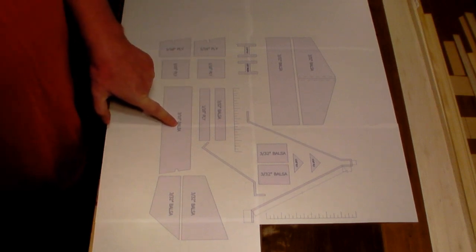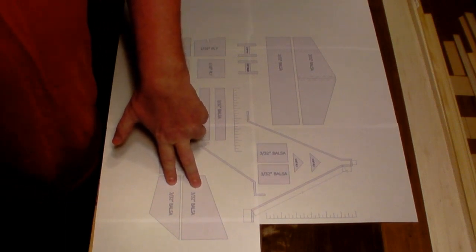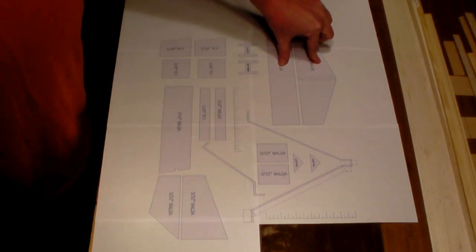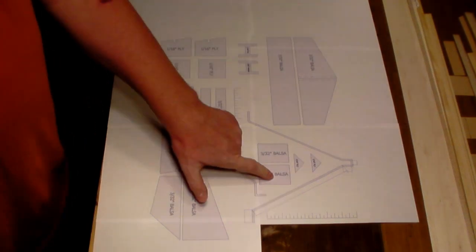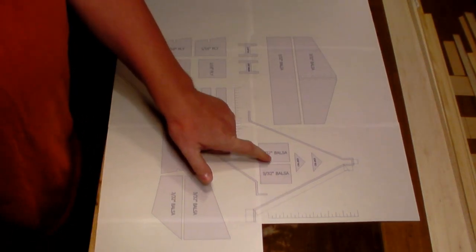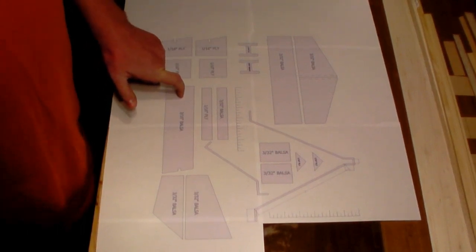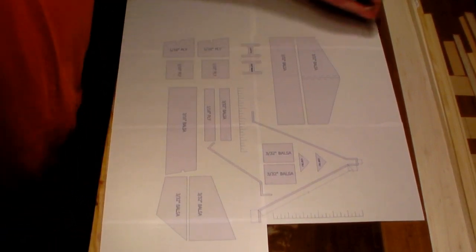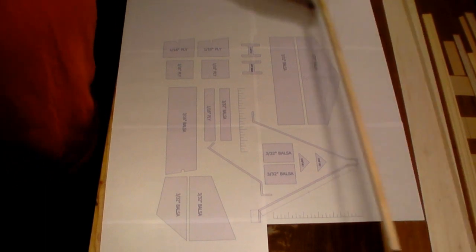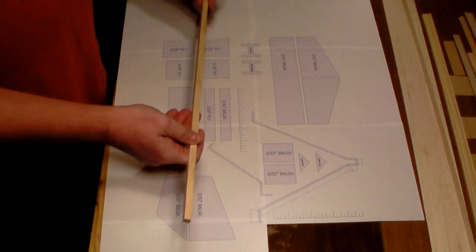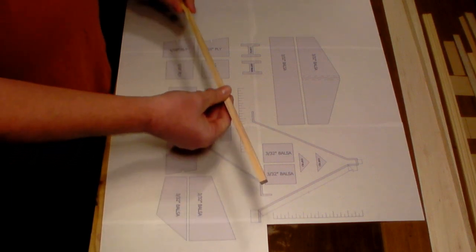3/16ths balsa for our pylon, 3/32nd balsa for our vertical and our rudder, 3/32nd balsa for our horizontal and our elevator, 3/32nd balsa, this is going to get glued to the bottom of our pylon to give us the right spacing, since we're using a 3/8ths dowel, like I have here, that's going to be our fuselage, 3/8ths square dowel, we need to be able to glue that all up.